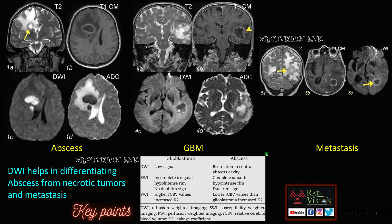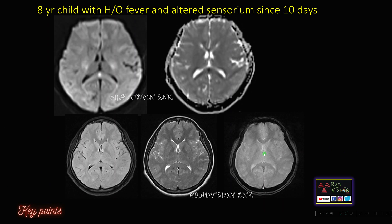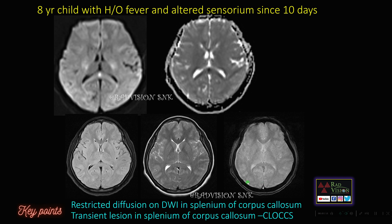Next: an 8-year-old child with history of fever and altered sensorium. You can see there is restricted diffusion on DWI in the splenium of corpus callosum. This is commonly labeled as a transient lesion in the splenium of corpus callosum, also known as CLOCS — cytotoxic lesions of the corpus callosum. The restricted diffusion on DWI in the splenium of corpus callosum helps in identifying CLOCS.